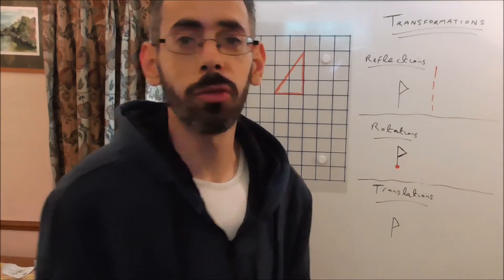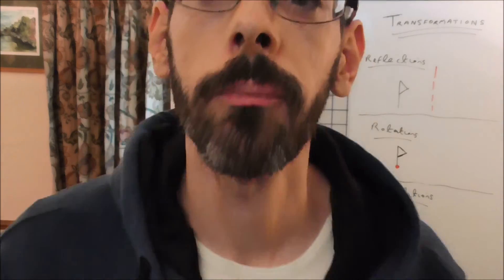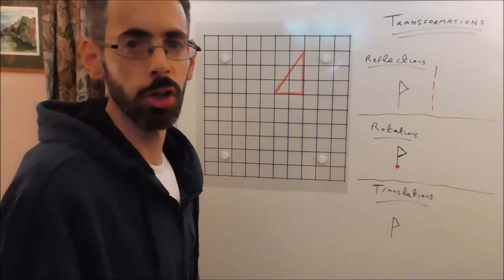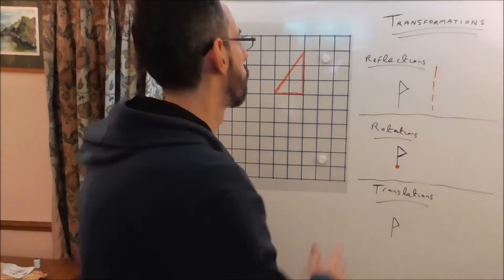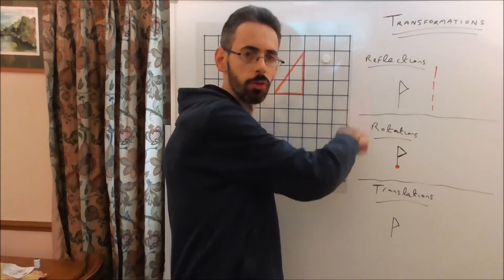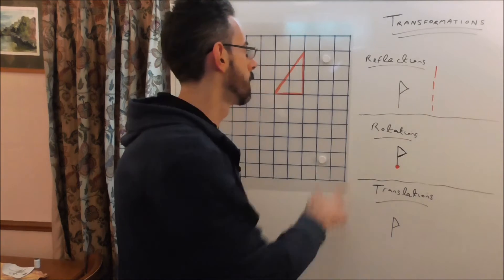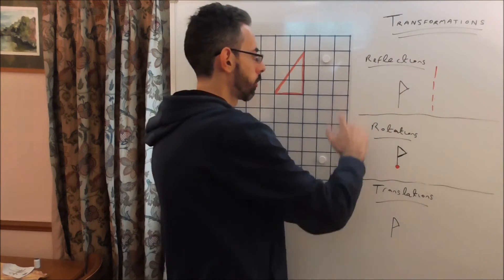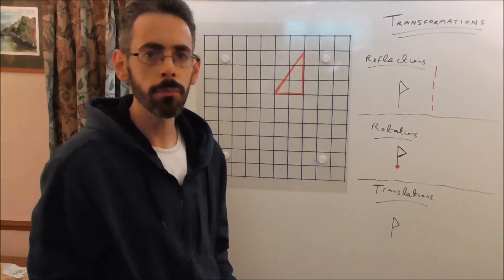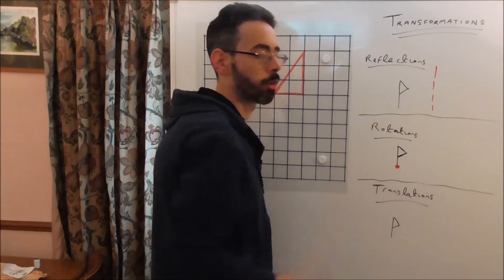So when you do maths, you learn lots of different ways of moving shapes on a grid. The different ways we move shapes are collectively called transformations. Here are a few transformations you may have heard of: reflections, rotations, translations. We're only going to do rotations today.